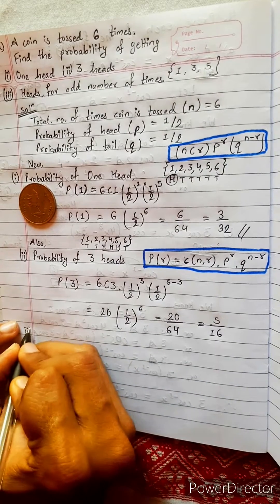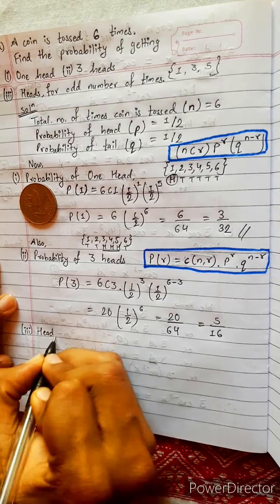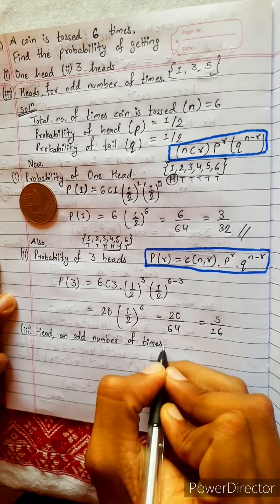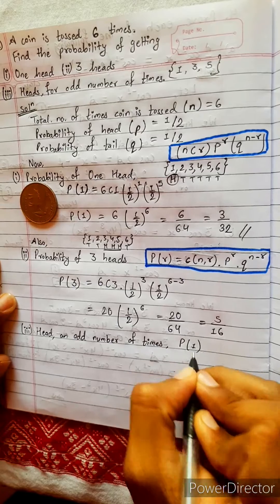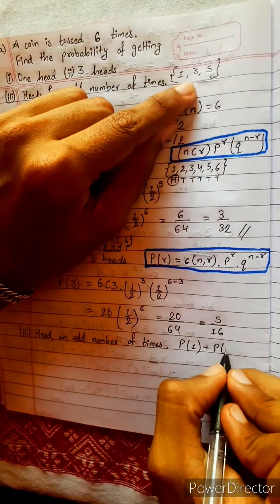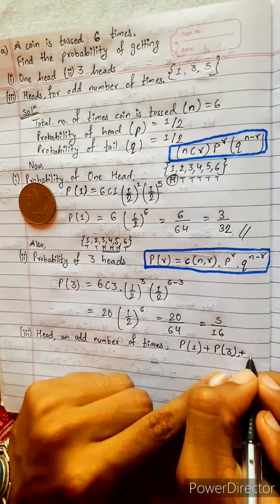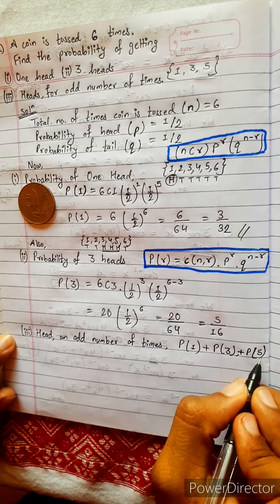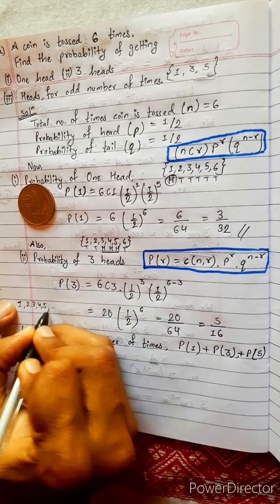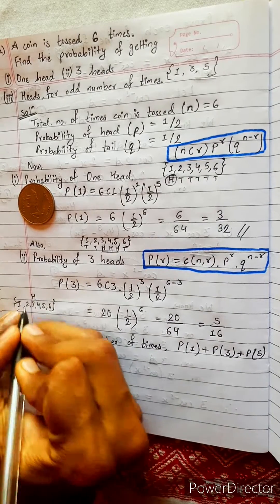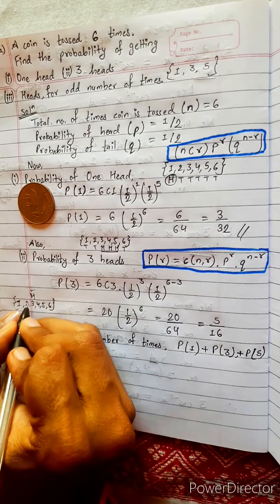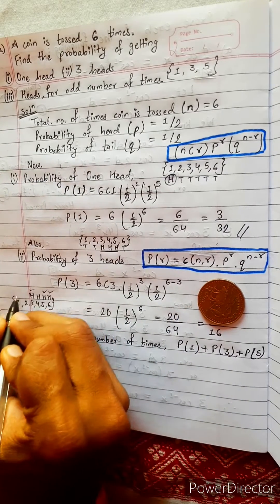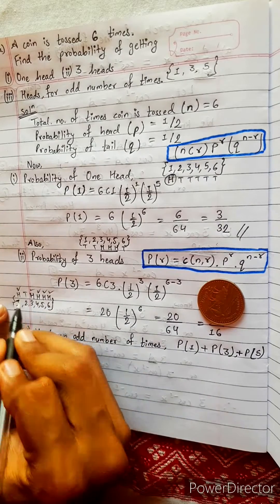The third number is a little bit longer — for an odd number of times. Odd number of times means we have to find for one time, then for another odd number which is three, and again we have to find probability for five times. Because we can get either one time head, or three times head, or five times head. In this six-times experiment, we can get one head with all others tail, or three heads with others tail, or five times head with only one tail. So we have to add all these probabilities.